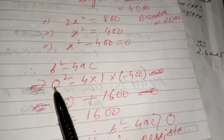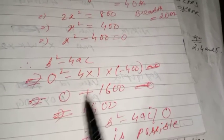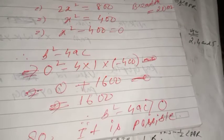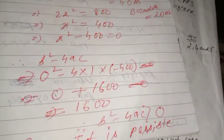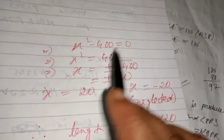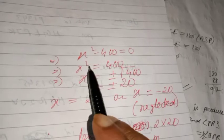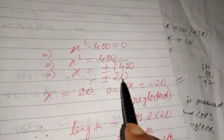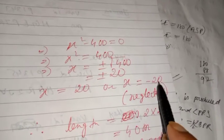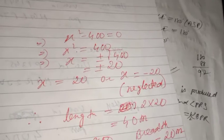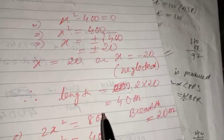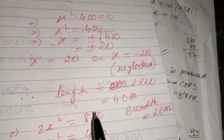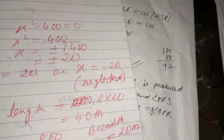Dividing by 2: x²−400 = 0. Check discriminant: b²−4ac = 0−4×1×(−400) = 1600 > 0, so real roots exist and the design is possible. Solving: x² = 400, x = ±20. Since breadth cannot be negative, x = 20. Therefore breadth = 20 meters and length = 2×20 = 40 meters.